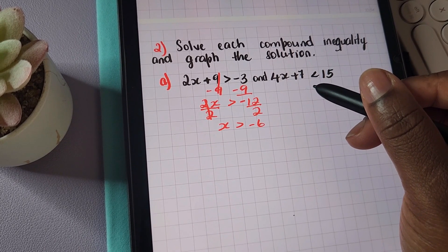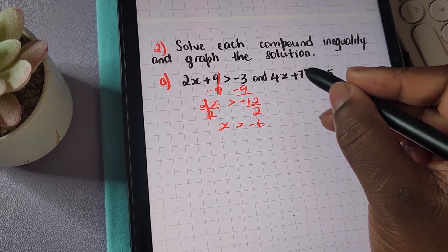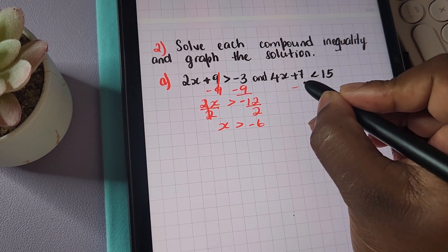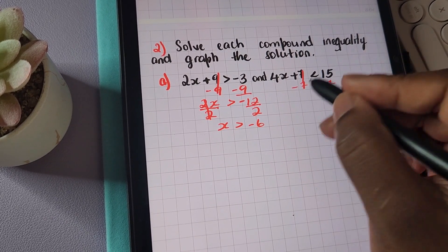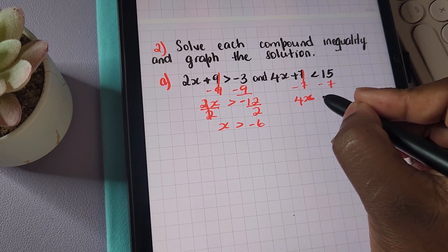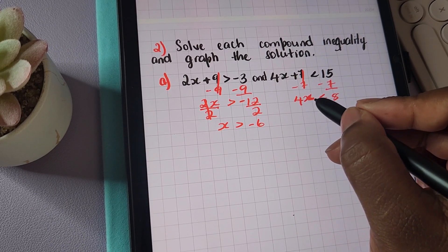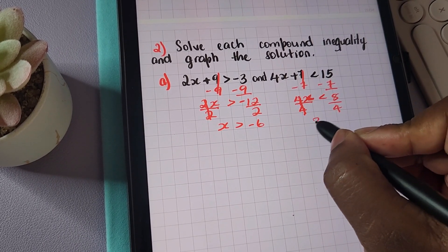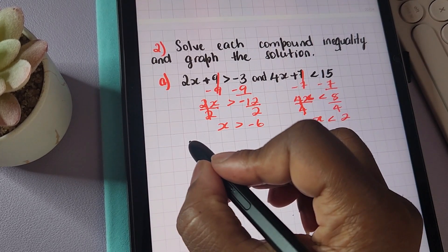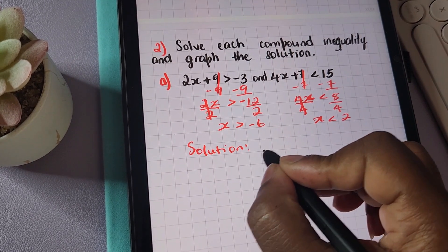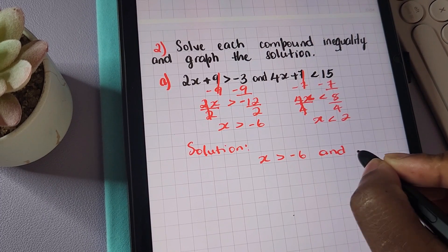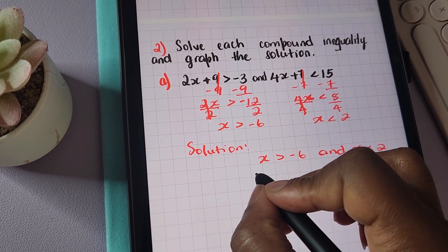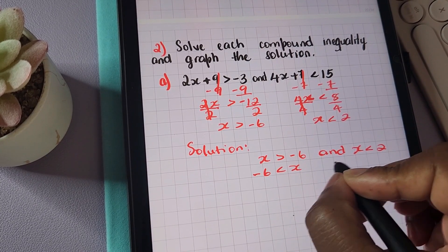Now we move on to the next inequality: four x plus seven is less than fifteen. First, we remove the seven by subtracting it from both sides, leaving four x is less than eight. Then we divide both sides by four, giving us x is less than two. So we represent our solution as x is greater than negative six AND x is less than two. The other way to represent it is: negative six is less than x, and x is less than two.